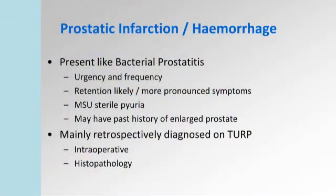Sometimes urologists see someone who has had a prostatic infarct. They won't present saying they've had a prostatic infarct — they present with inability to pass urine, much like severe prostatitis. They often go into retention and may need a TURP, at which point the chips appear bruised and red, indicating bleeding inside the prostate causing inflammation. Like prostatitis, the PSA will be elevated. Diagnosis can also be confirmed on histopathology, which shows inflammatory cells and evidence of previous infection.